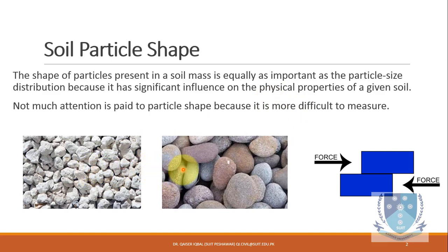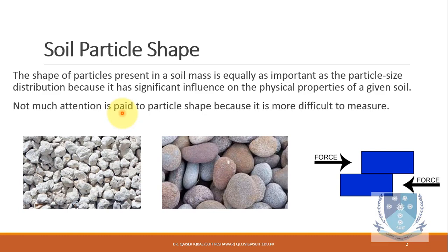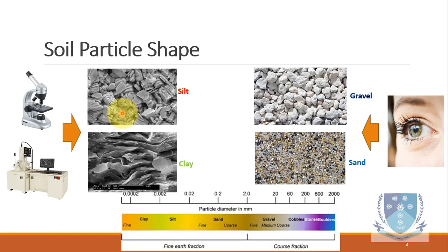However, soil is very different because its properties are primarily dependent on particle shape, not only size. In these two cases, the particle size may be more or less the same, but physical properties will differ. The only reason the soil properties will be different is because of the particle shape. Because it is difficult to measure — especially for microscopic or sub-microscopic soils like silts and clays — it is not receiving enough attention. We will discuss how particle shape influences physical properties and how you can quantify and determine the shape of a given particle.